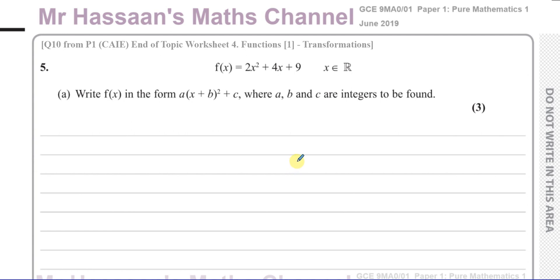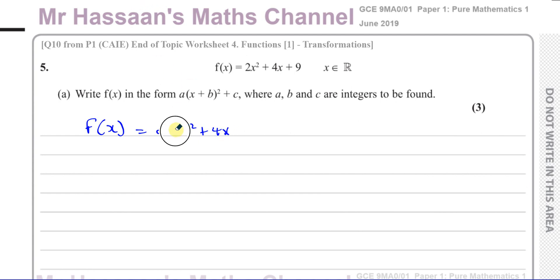So it says f of x equals 2x squared plus 4x plus 9, where x is an element of the real numbers. Write f of x in the form a times (ax plus b) squared plus c, where a, b, and c are integers to be found. So in this case we have to complete the square. Let me just write it down first: 2x squared plus 4x plus 9.